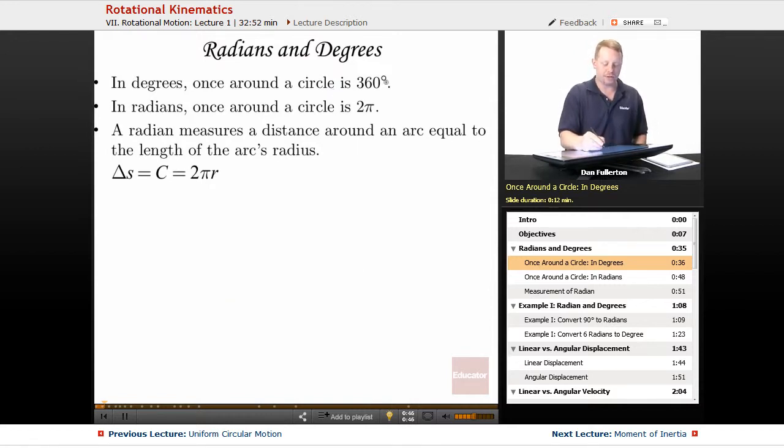In degrees, once around a circle is 360 degrees, and once around a circle is 2 pi in radians. And a radian measures the distance around an arc equal to a length of the arc's radius. So the distance around delta s is circumference or 2 pi r, or if you're measuring diameter it would just be pi times d.